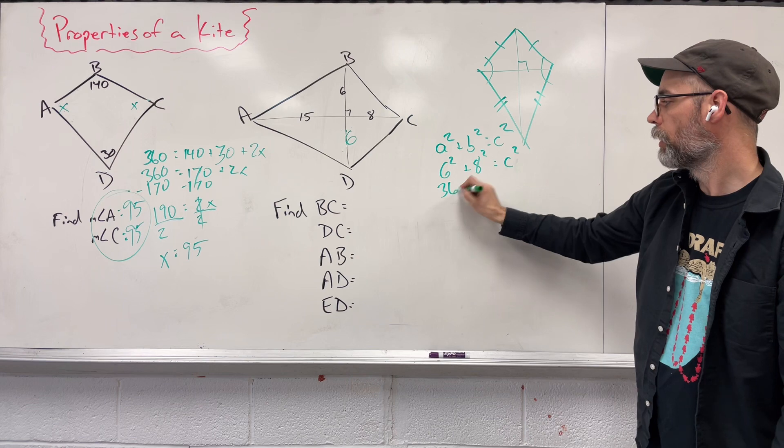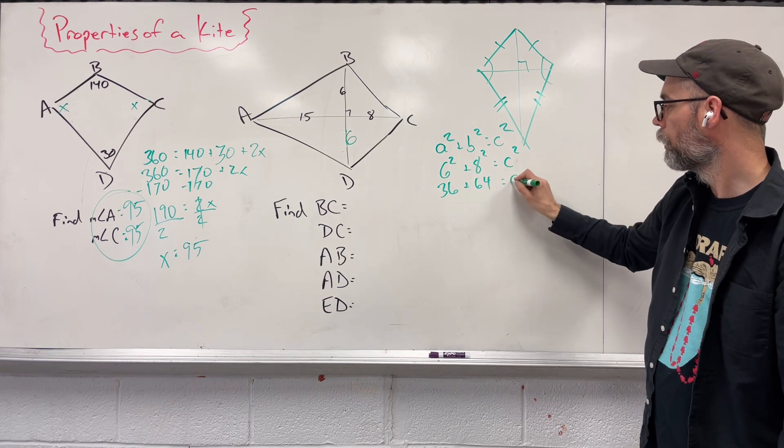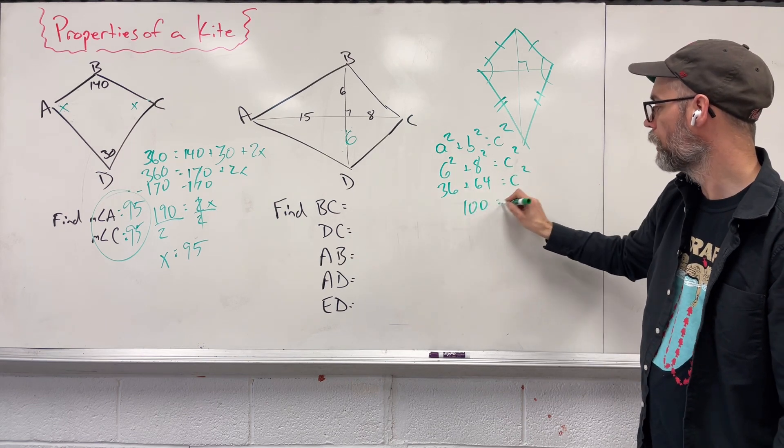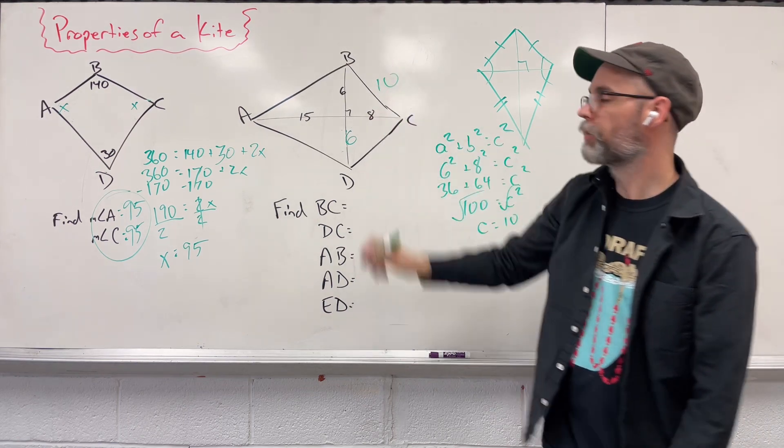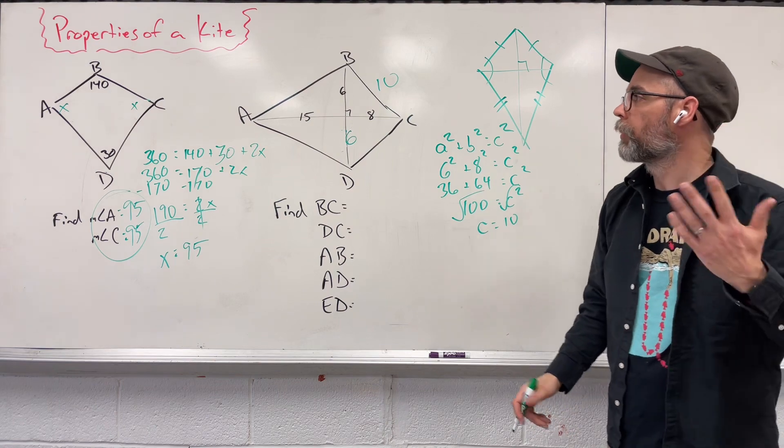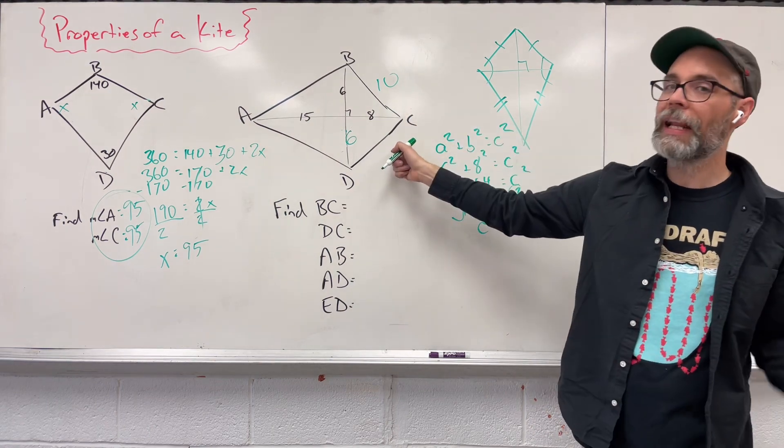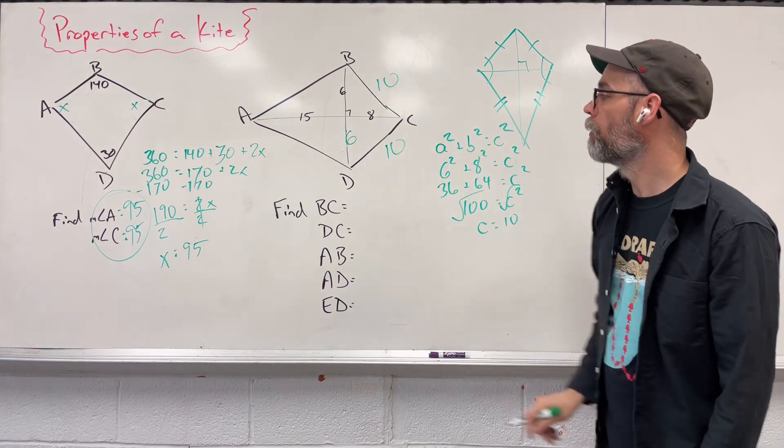36 and 64 C squared gives us 100. Square root C equals 10. There's mystery side. So when we're dealing with a kite, we know that this side and this side have to be the same. So there's a 10 there.